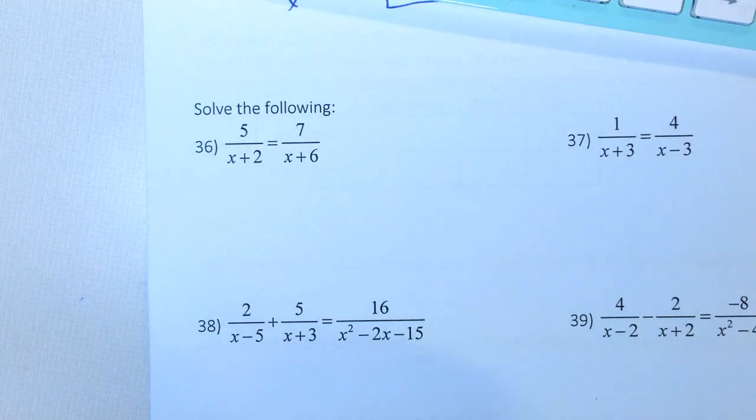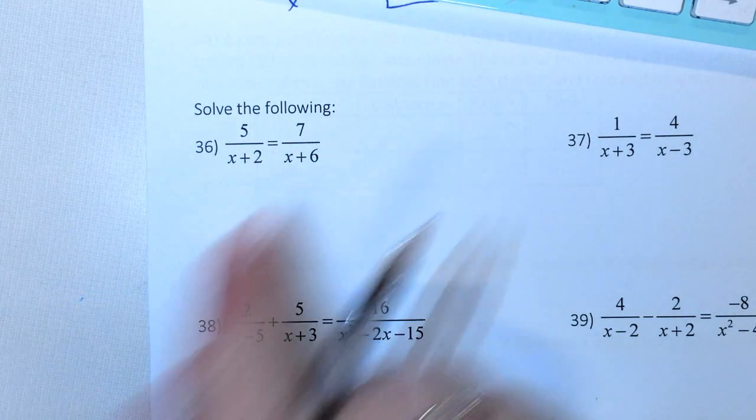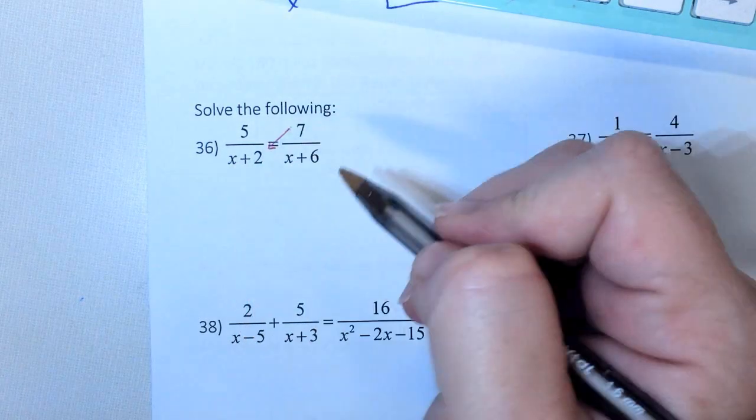We either need a common denominator, or if it's a single fraction equals a single fraction, you can cross multiply. So we can cross multiply on this one.